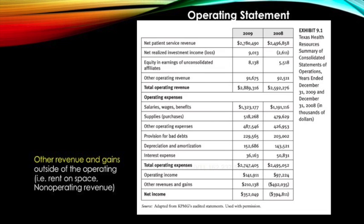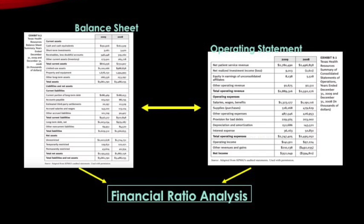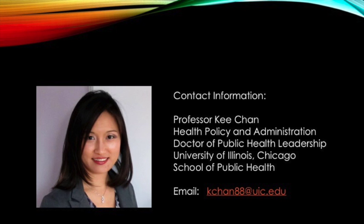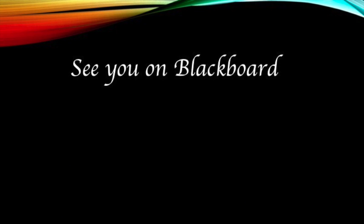Examples of other revenues and gains: in a hospital setting, if there is space available at the bottom floor owned by the hospital, they could rent that space out to a yoga studio. The data extracted from the balance sheet and from the operating statement give rise to financial ratio analysis. In our next lecture video, we'll discuss financial ratio analysis in more detail — these financial ratios are very crucial for a decision maker to understand the weakness and strength of an organization. See you on Blackboard!